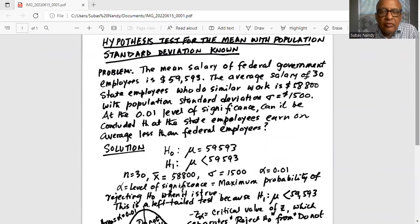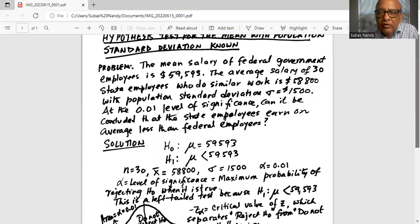At the 0.01 level of significance, can it be concluded that the state employees earn on average less than the federal employees? So the alternate hypothesis or the test hypothesis is H1: mu less than $59,593.